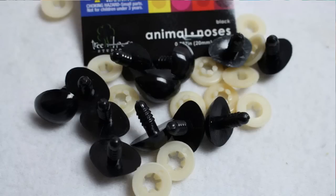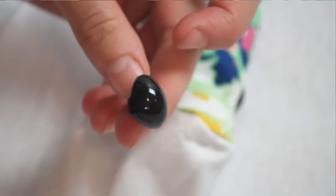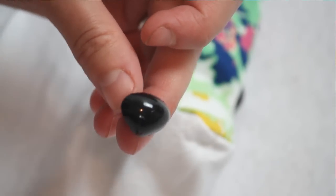So when you buy child safe eyes and noses for your project, they will come with the eyes or noses and then the same number of backing pieces. The posts on the back will have grooves that the backing piece snaps into and that is what locks it in place to be child safe. I get mine at Hobby Lobby but I will have some linked below that are available on Amazon in case you don't have a Hobby Lobby near you.